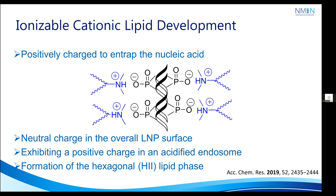Ionizable cationic lipids play several important roles in LNP-based delivery systems. First, under acidic conditions, the lipid is positively charged, which is crucial to interact with the negatively charged nucleic acid polymer within the nanoparticle. Second, the lipid must produce LNPs with an overall surface charge close to neutral. Also, in an acidified endosome at pH 5 to 6, the lipid must exhibit a positive charge to interact with endogenous anionic lipids. Finally, to efficiently deliver the nucleic acid payload, the lipid must exhibit a physical shape that causes the formation of the H2 hexagonal lipid phase.